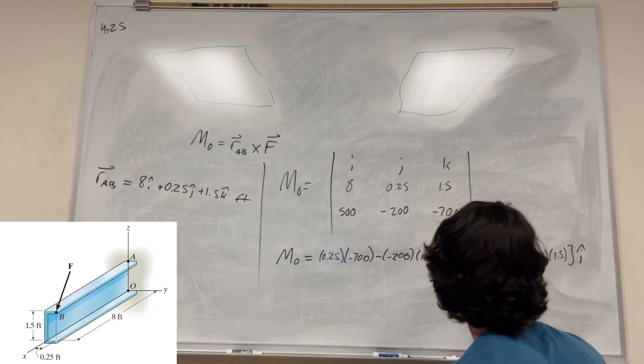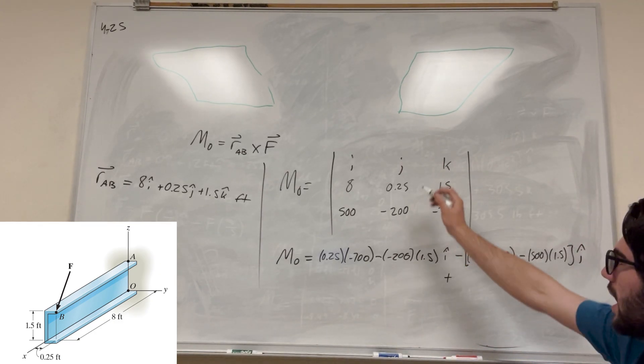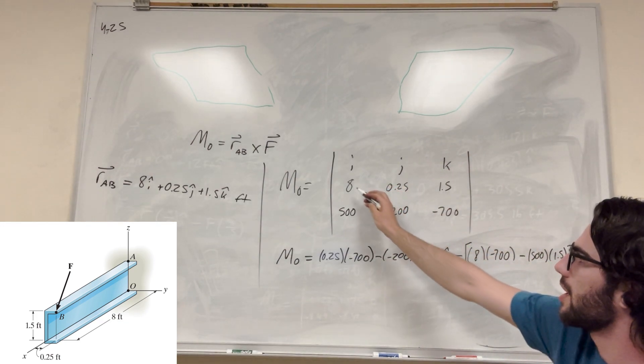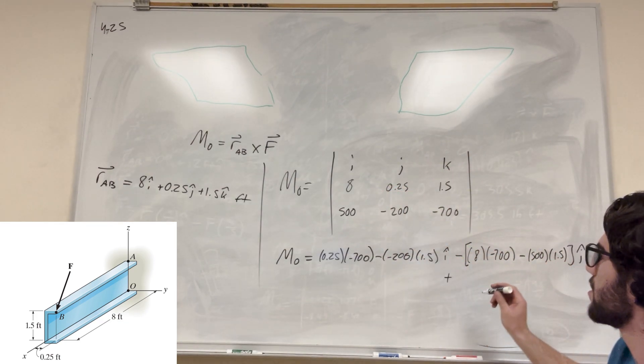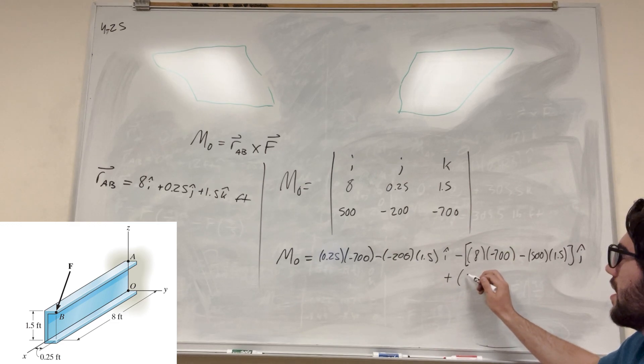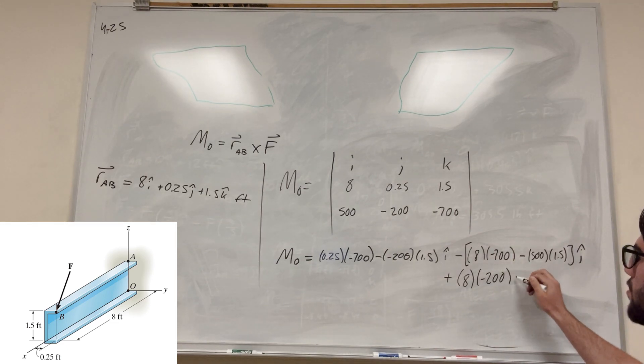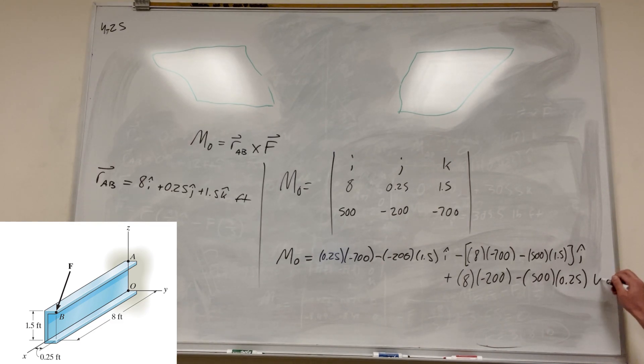And then we're going to add k. So then k, we're going to start here and we're going to work it right now. We're going to multiply these together and subtract them by those two. So it's going to be 8, negative 200, minus 500, 0.25, and that's for k.